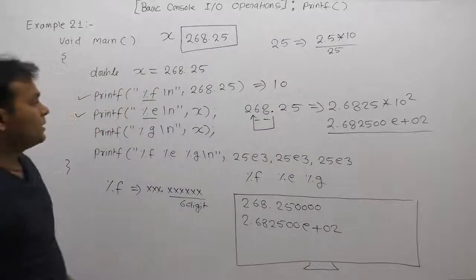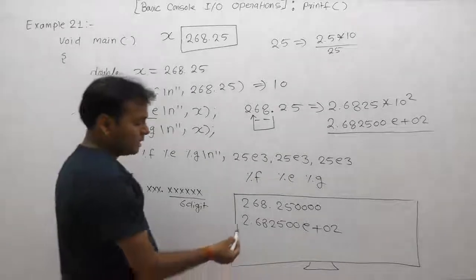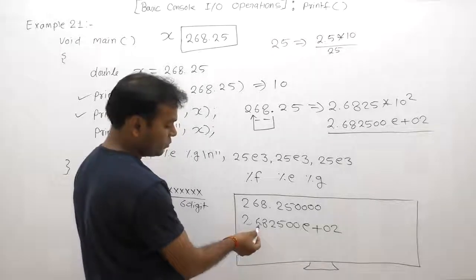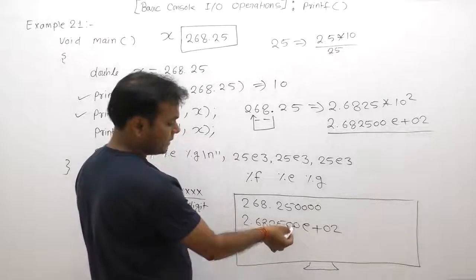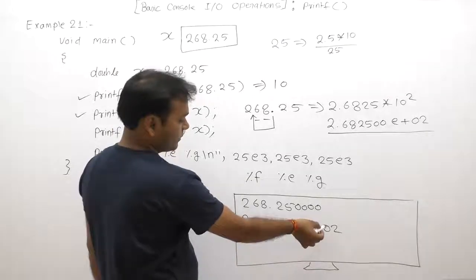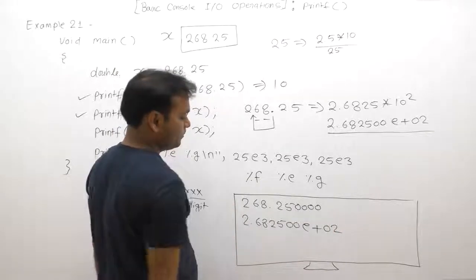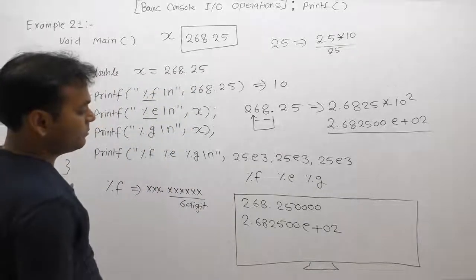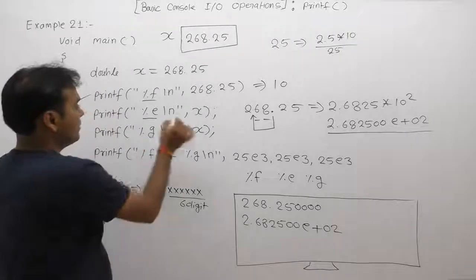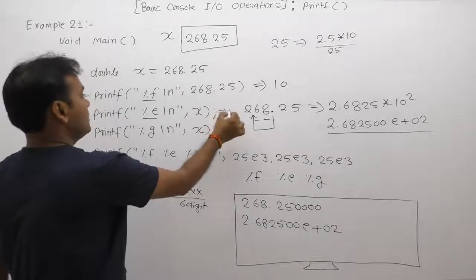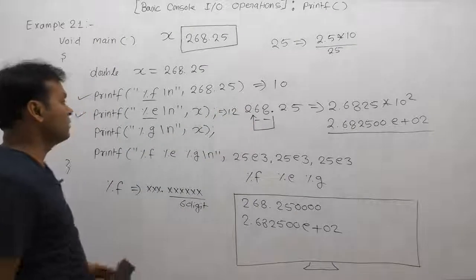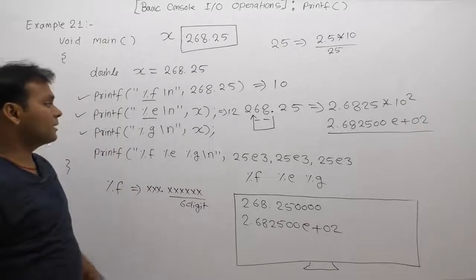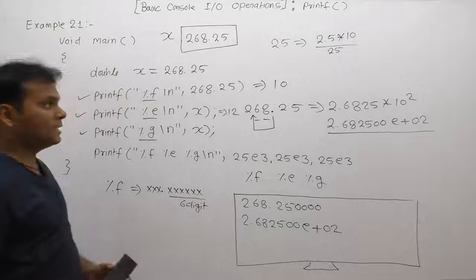For the second printf using %e, counting all printed symbols — one through twelve — the return value is 12. However, we are not storing this return value.